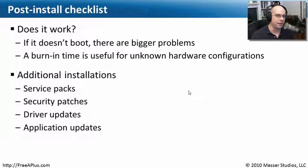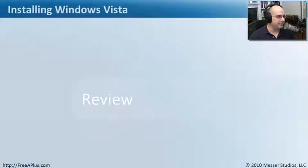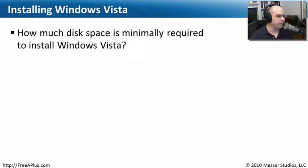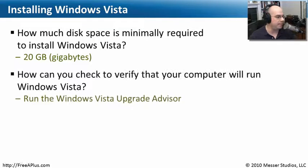Maybe do a test of your applications — make sure the ones that are important to be running on this desktop, that were running in the older operating system, are now working properly in Windows Vista as well. Let's review this Windows Vista installation that we've done. Let's start with our first question: how much disk space is minimally required to install Windows Vista? That answer is 20 gigabytes. You probably are going to want more than that once the machine is up and running, but that's what you need at a bare minimum.